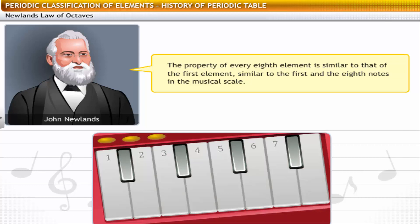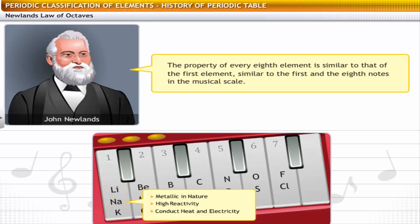Consider the list of elements with their atomic weights in increasing order. Starting with lithium, the eighth element from lithium is sodium. Similarly, the eighth element from sodium is potassium. Lithium, sodium, and potassium show similar properties.